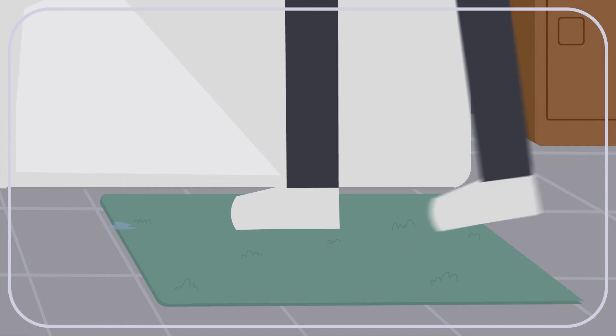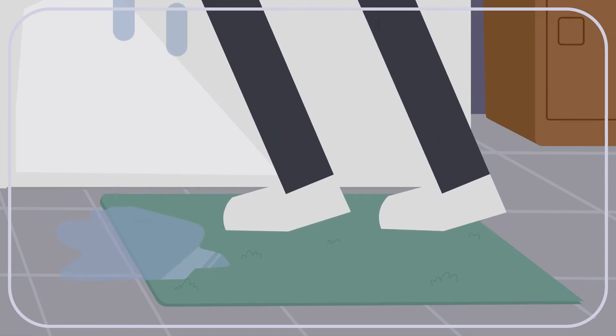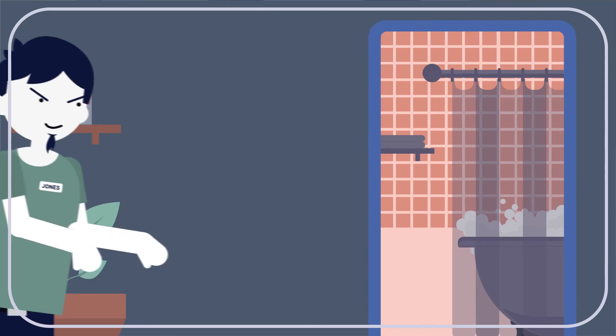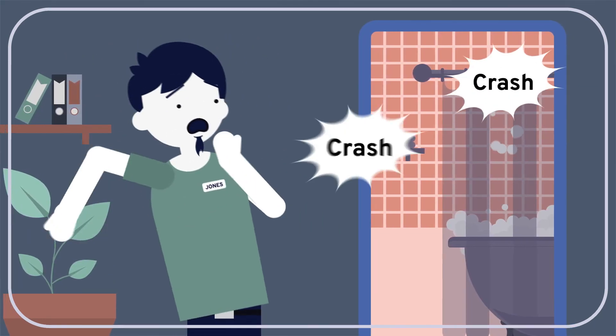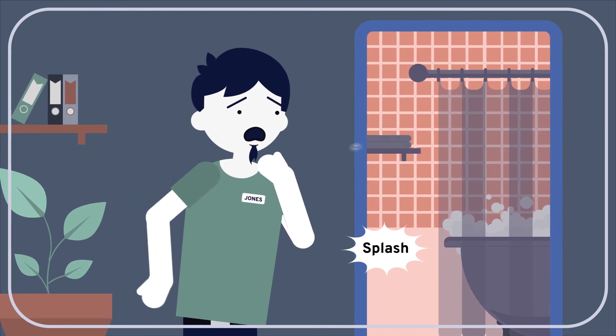One night, while Smith's nephew is having a bath, Smith sneaks up and drowns the boy. Jones also plans to drown his nephew during bath time, but as he sneaks up, he sees the boy slip and fall unconscious into the water.